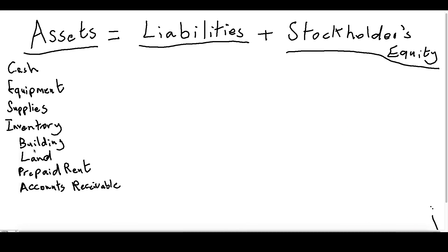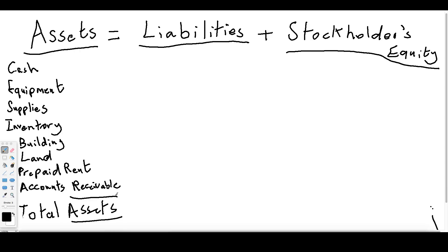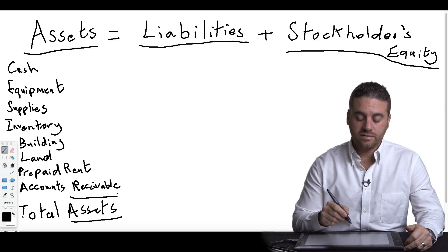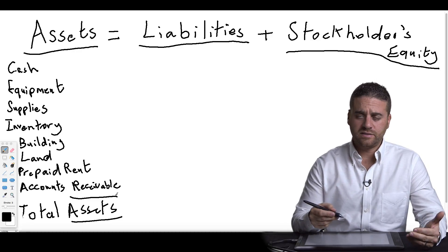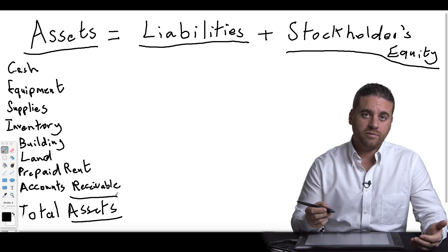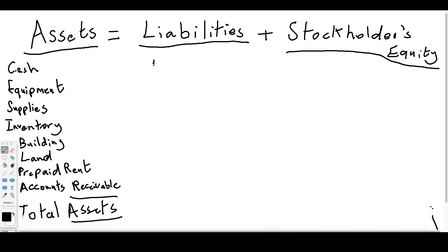Once you add all these accounts together, you get total assets. Now let's talk about liabilities. Liabilities are any amount that we owe to someone. The most important account under liabilities is called accounts payable — a specific amount we will pay to someone in the future.